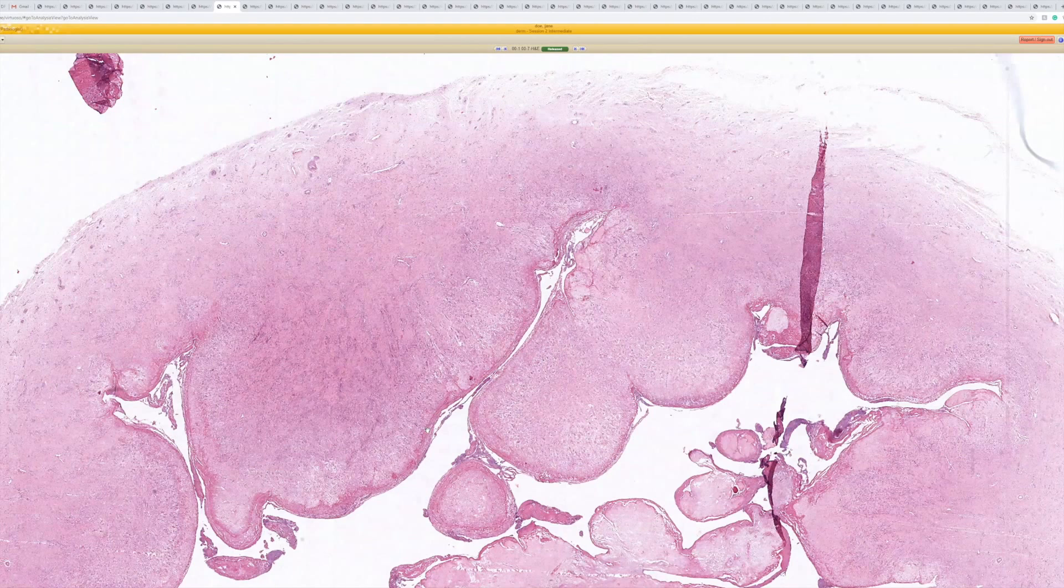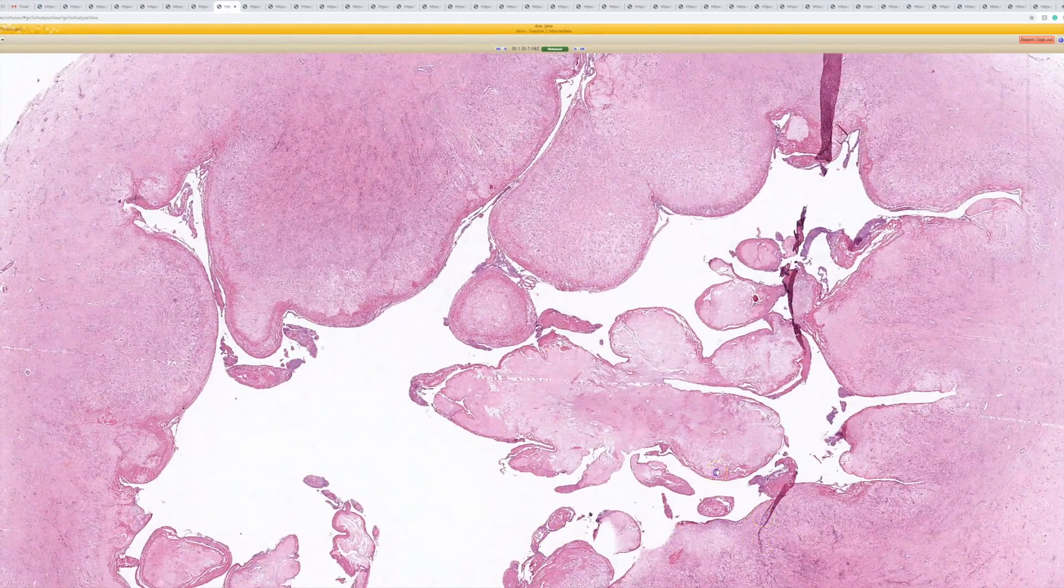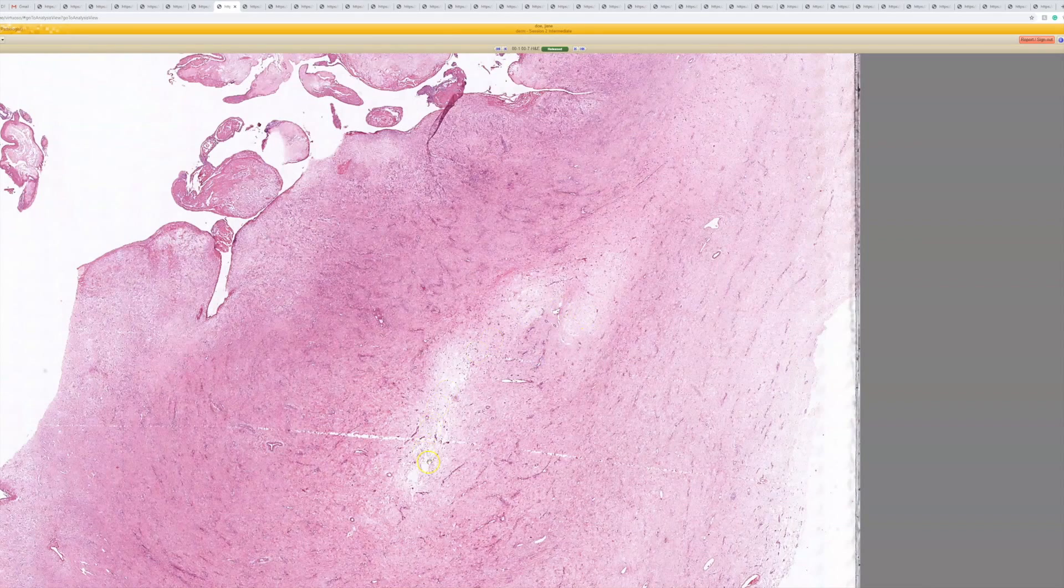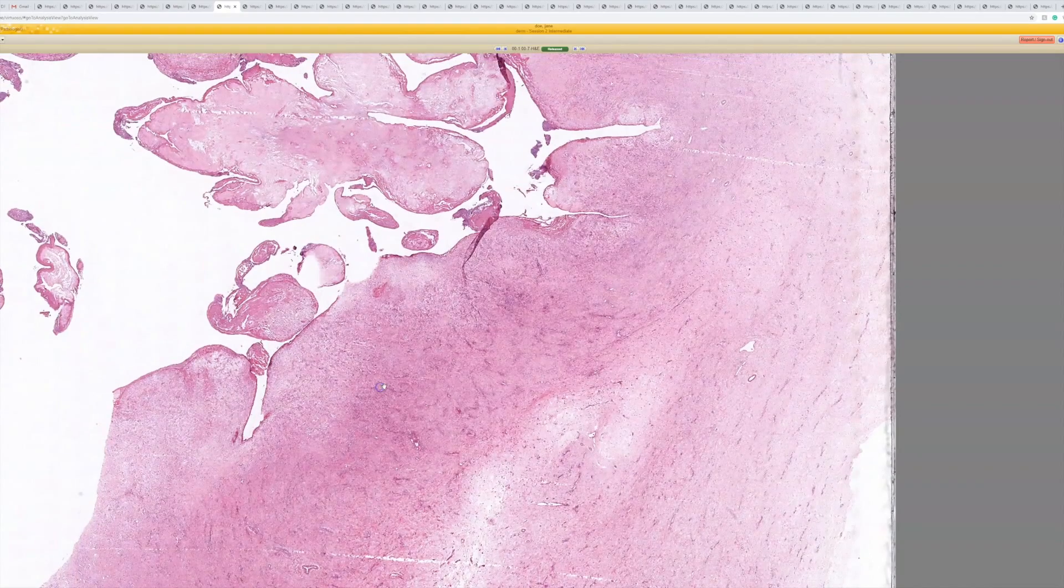But a lot of times that's totally washed out like is the case here, all washed out during processing. Sometimes that can leak into the surrounding tissue and give you zones that look kind of myxoid or loose and mucinous. It just varies from case to case.